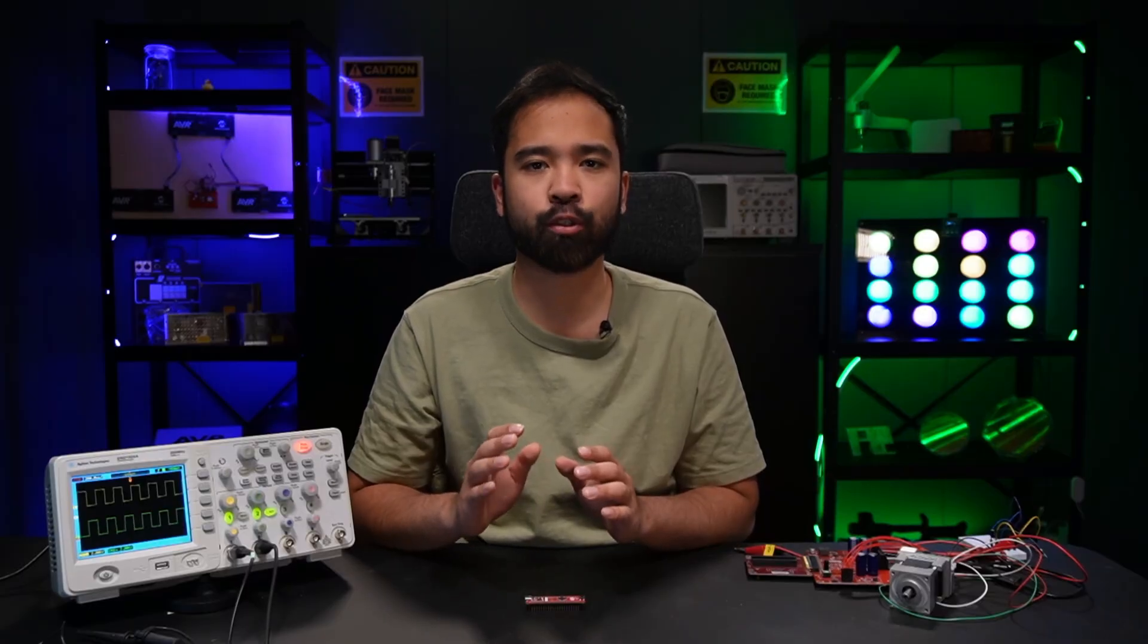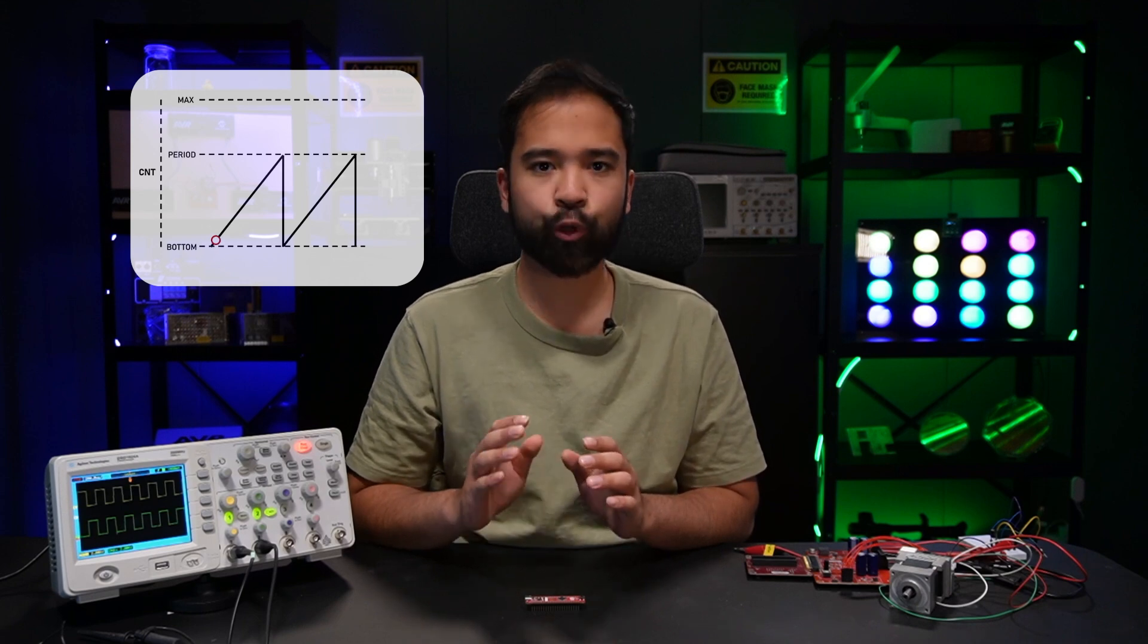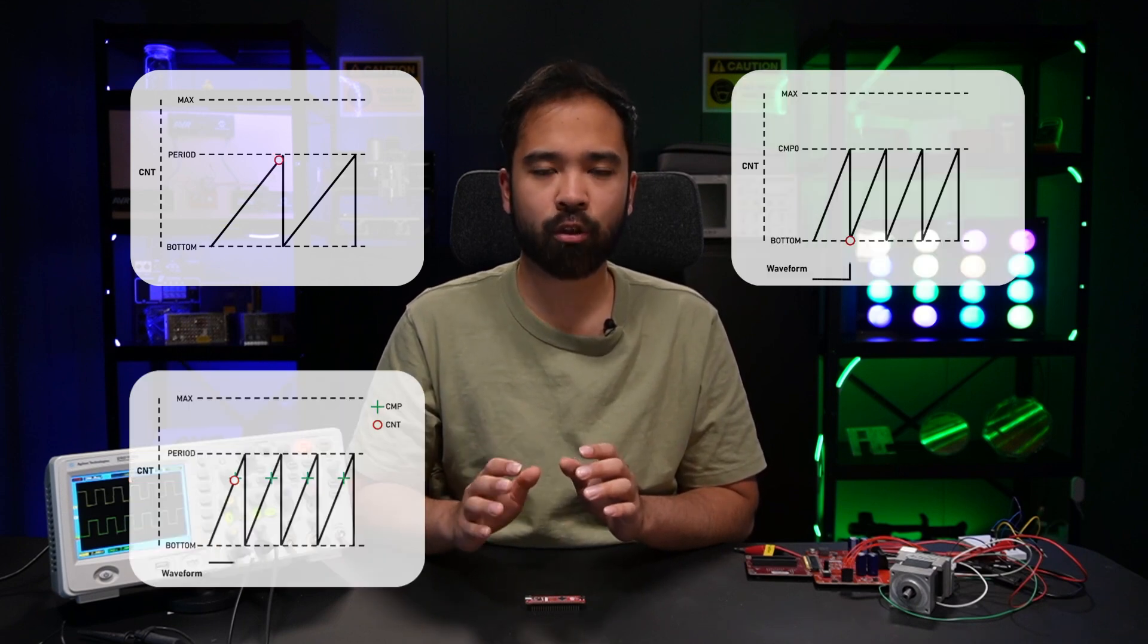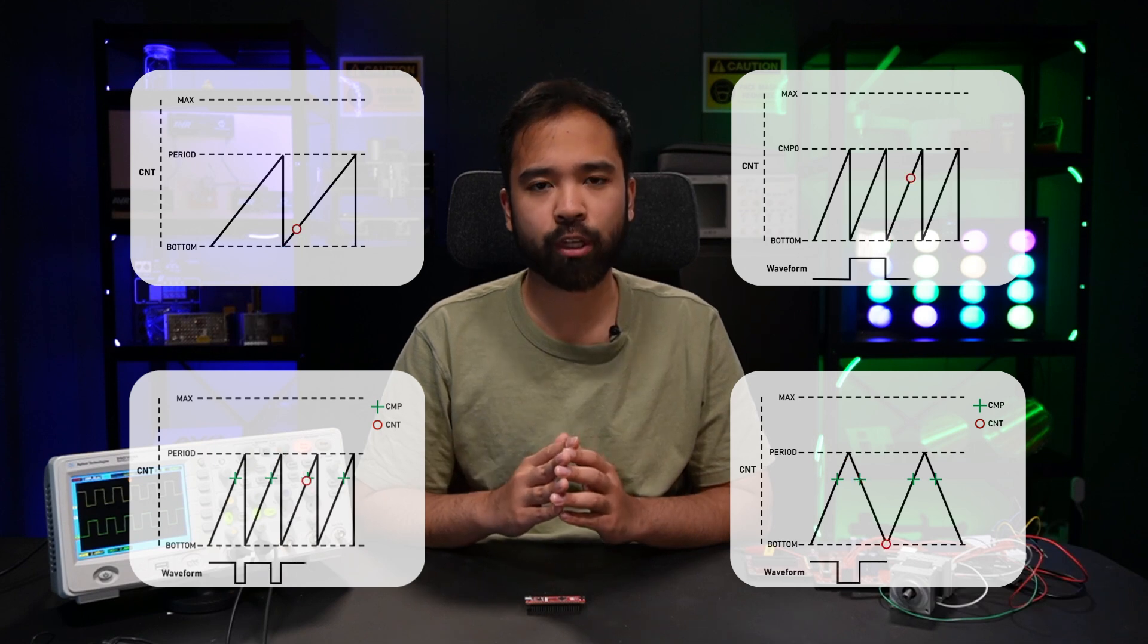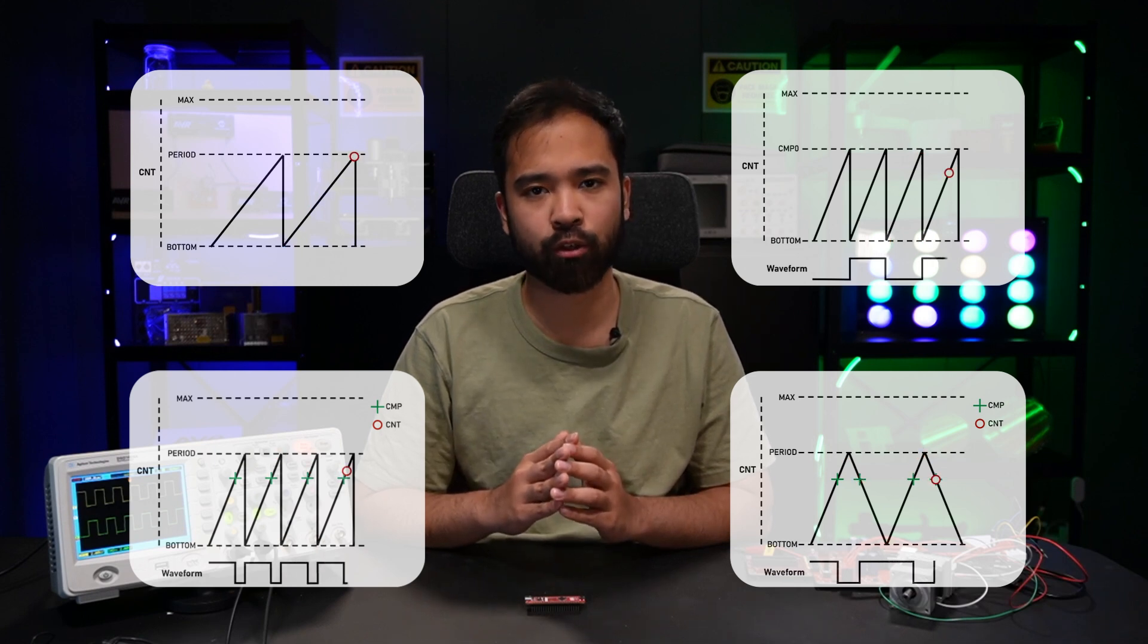The TCE has four main modes of operation: normal mode, frequency generation mode, single slope mode, and dual slope mode. All of these modes can be used with the TCE's high resolution mode.